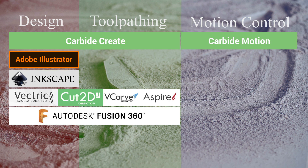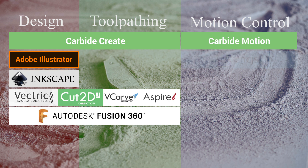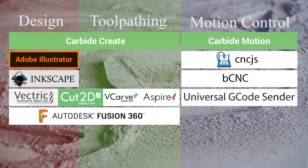Finally, while they're well beyond the scope of this video, there are alternatives to Carbide Motion as well. CNCJS, BCNC, and Universal G-Code Sender are just some of the options you have if you're looking for features not offered in Carbide Motion. I would consider switching your motion controller to be an advanced topic, and most users should really consider staying with Carbide Motion unless they have a strong reason not to.